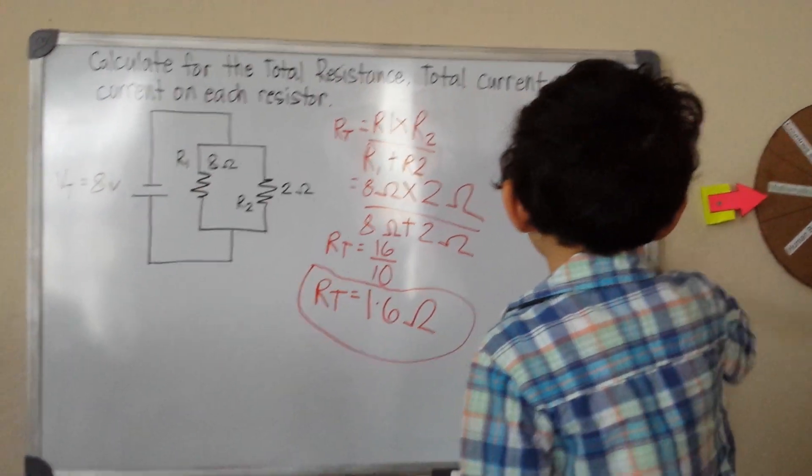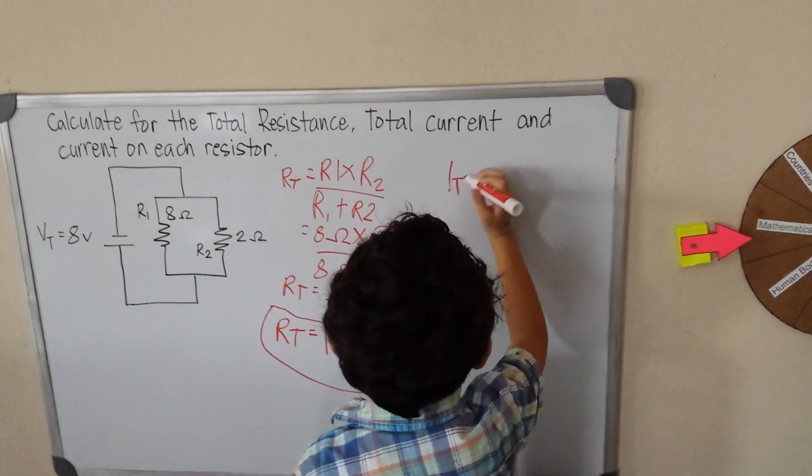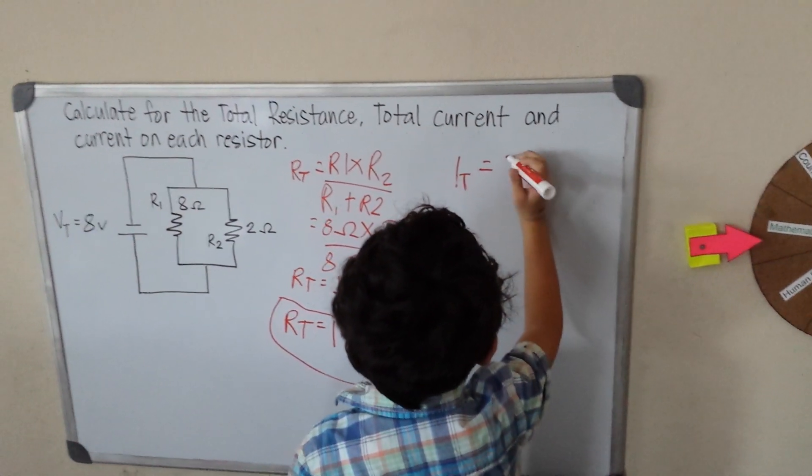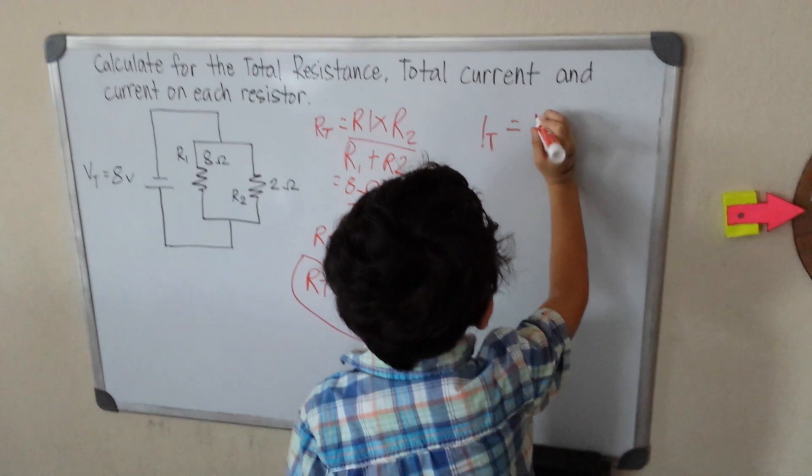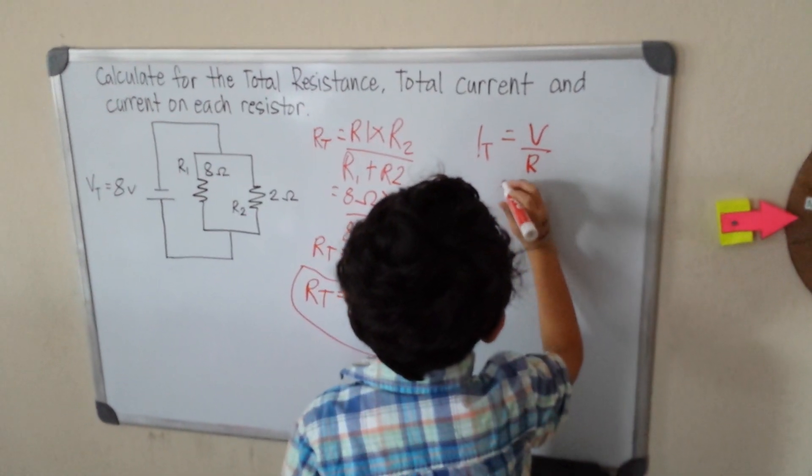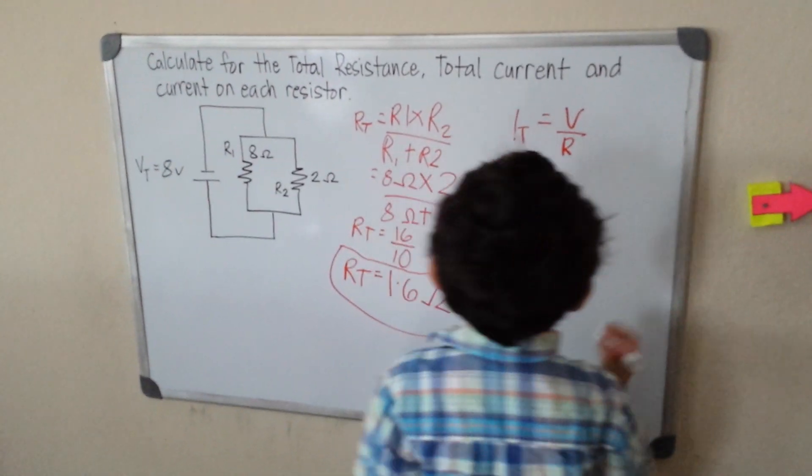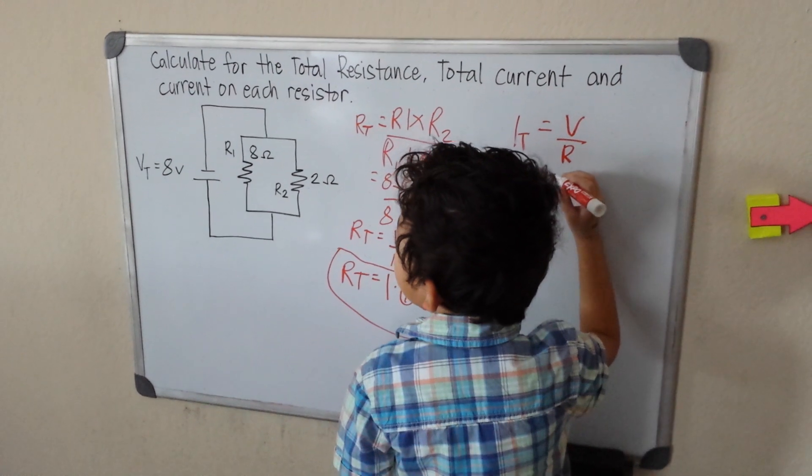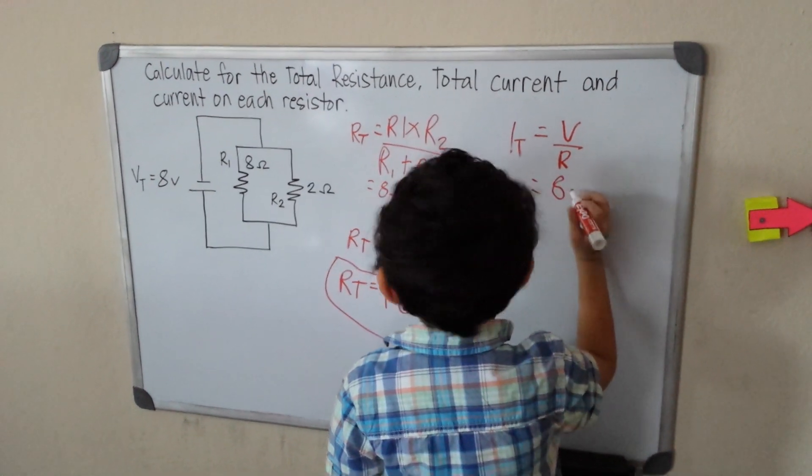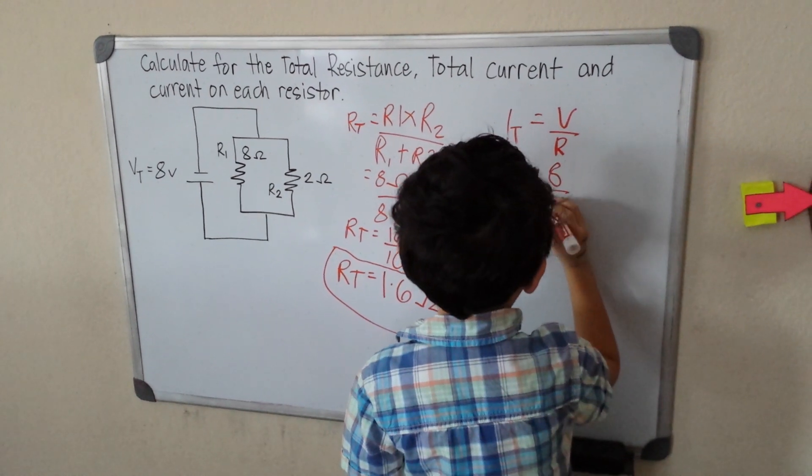Now what's going to be our total current? What's the current? The current is V over R. V means voltage, R means resistance.